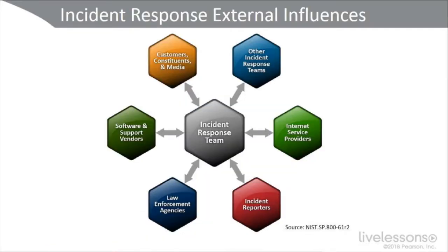Finally, there's the post-incident activity. Here we get our lessons learned — maybe an after-action report. We'll use collected incident data to add to our knowledge base. We also need to consider how we're going to retain the evidence, and whether we need a chain of custody if there's going to be a court case. In the NIST publication 800-61R2 diagram, we see our incident response team at the center. External influences include other incident response teams, service providers and managed security service providers, cloud providers, and incident reporters — people doing monitoring, auditing, and reviewing logs. This may involve law enforcement agencies.